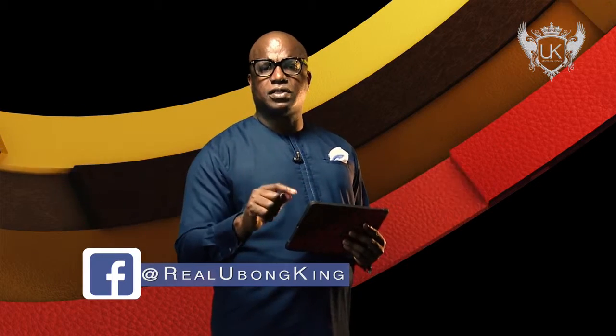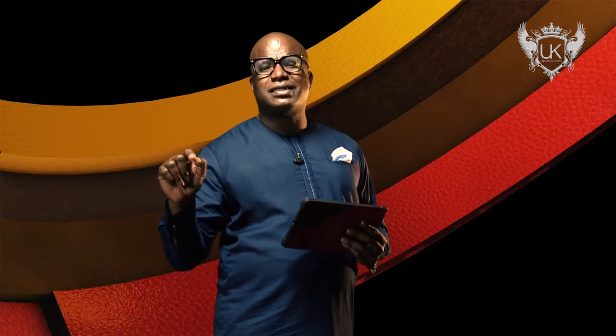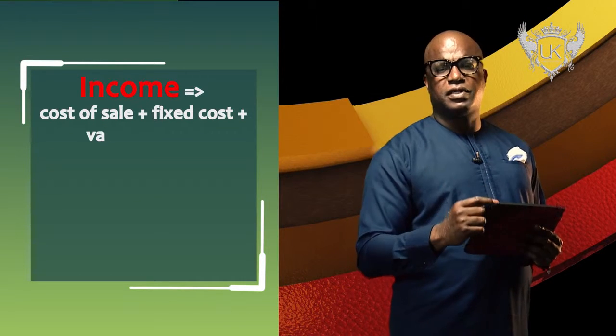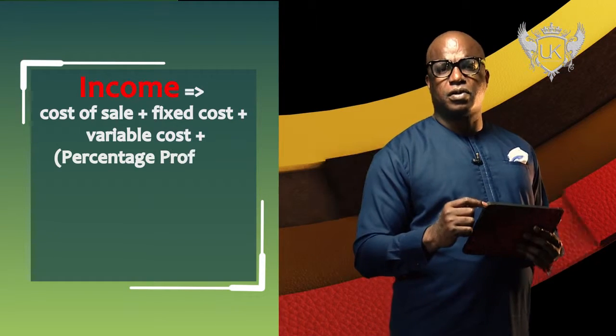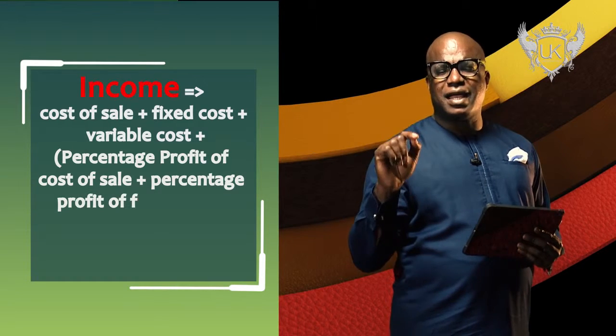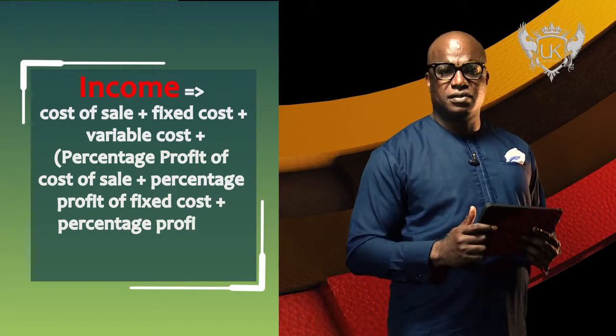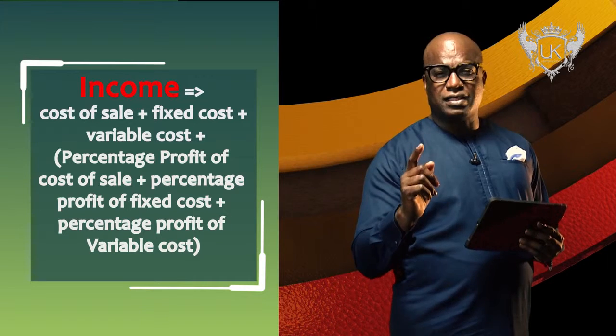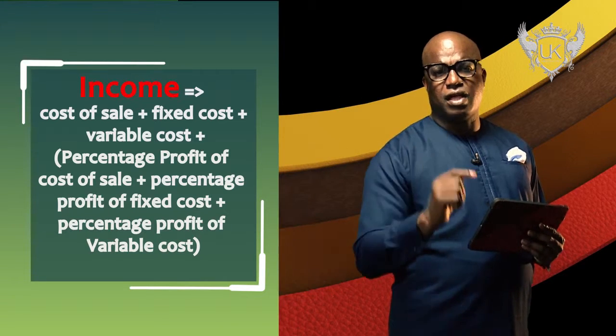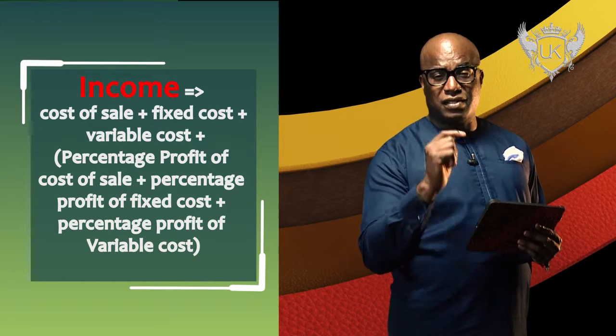So when the income is equal to cost of sale plus fixed cost plus variable cost, plus a percentage of those parts — which is called the profit — if you have a markup of 20% as your profit, then total income is: (cost of sale plus fixed cost plus variable cost) times a percentage. If you understand that formula, then you're in business.